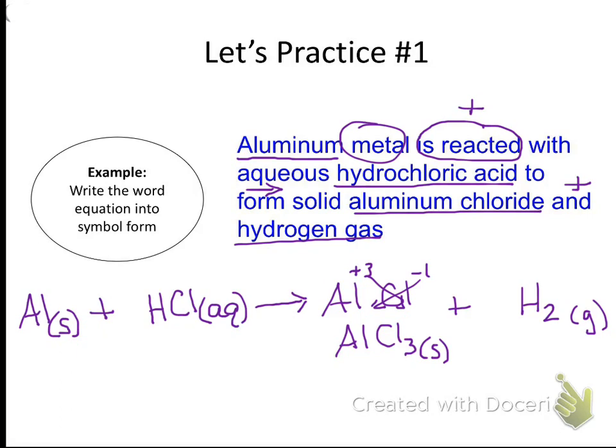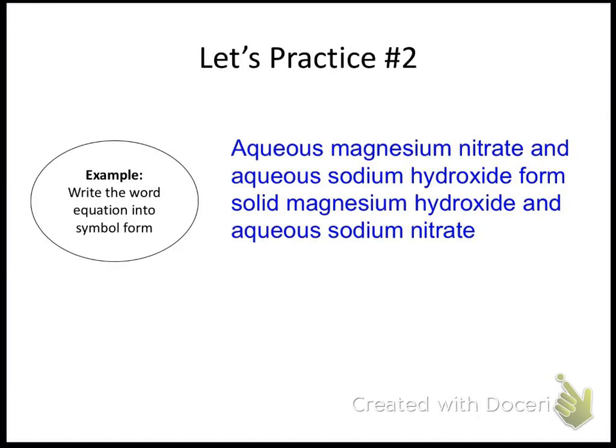Alright. Let's try a second example. We're writing equations. So we're going to pick apart the parts. We've got aqueous magnesium nitrate and - so we know this is our plus sign. Aqueous sodium hydroxide. 'Form' - so form is where our arrow is. Solid magnesium hydroxide and aqueous sodium nitrate. So we have four things in this equation again. And we have to think about this. We've got to go back and use our rules for writing ionic compounds.